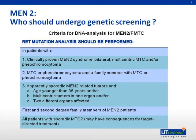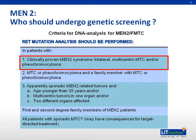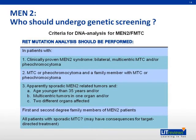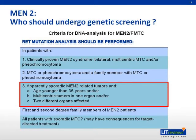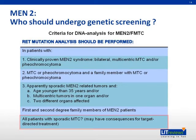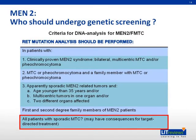Who should go for genetic screening in MEN2? The suggested groups include clinically proven MEN2 syndrome patients; patients with MTC or pheochromocytoma and a family member with similar history of such tumors; apparently sporadic MEN2-related tumor in a patient younger than 35 years of age who has multicentric tumors in one organ or two different organs; first and second degree relatives of MEN2 patients; and all patients with sporadic medullary thyroid carcinoma.